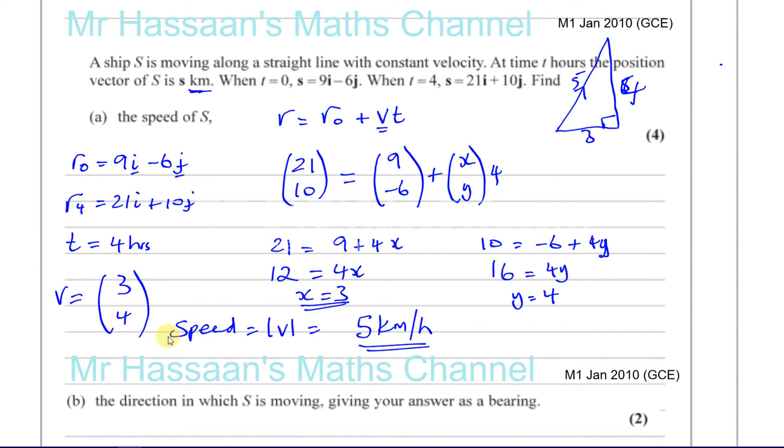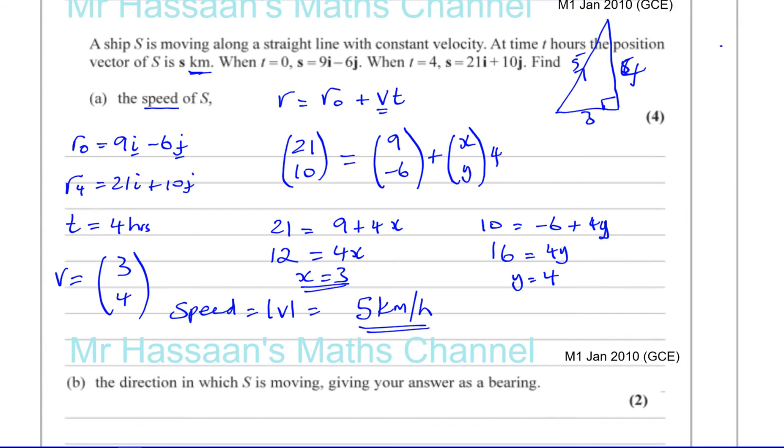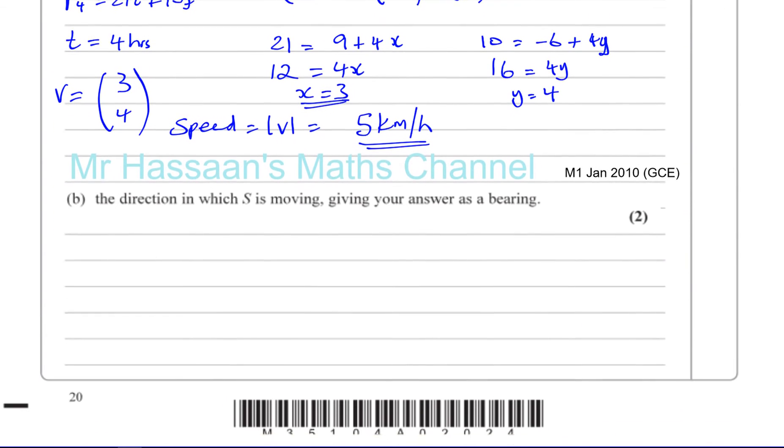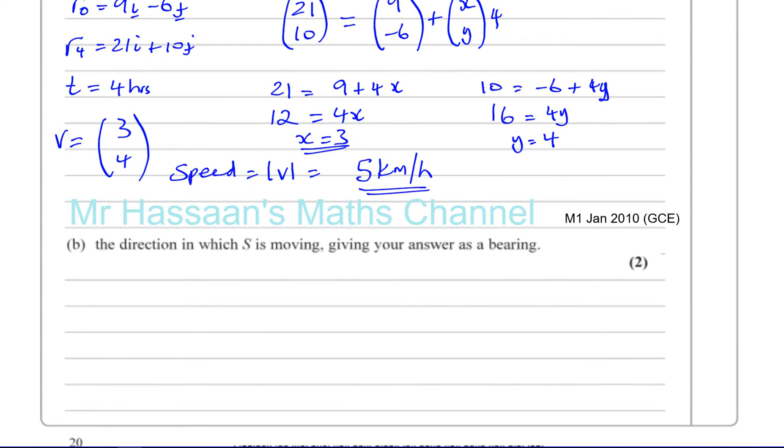There's the answer. Many people will write the answer as 3i plus 4j. However, this is asking for the speed, not the velocity. So you will lose a mark if you leave it as 3, 4. You must find the magnitude of the velocity, which is the speed.